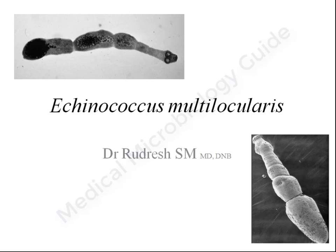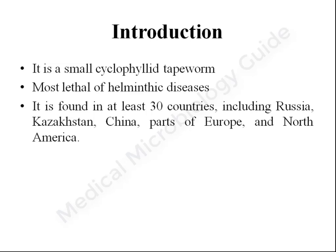I have already explained the classification of Echinococcus species and Echinococcus granulosus in my previous video. Echinococcus multilocularis is a small cyclophyllidean tapeworm. The importance of this tapeworm is it causes a lethal disease. The disease resembles cancer as it spreads to the neighboring tissue and also metastasizes to different parts of the body from the site of lesion. The disease is found in almost 30 countries including Russia, Kazakhstan, China, parts of Europe and North America.